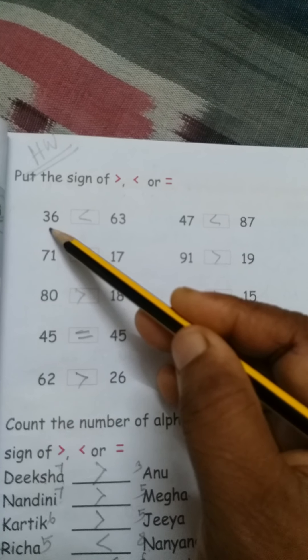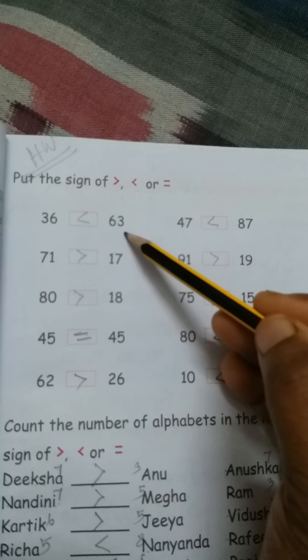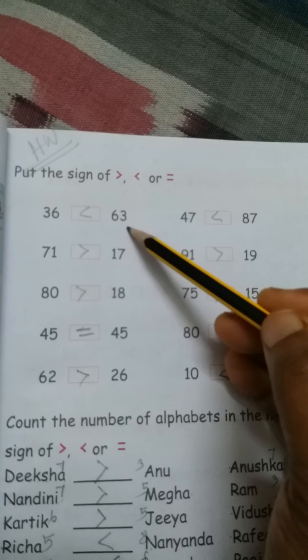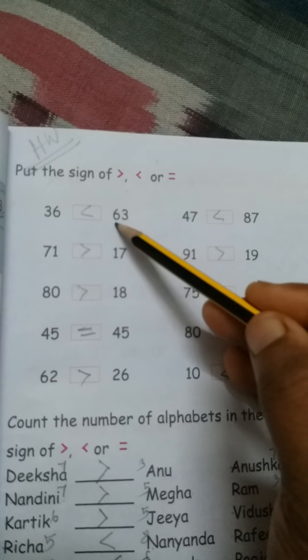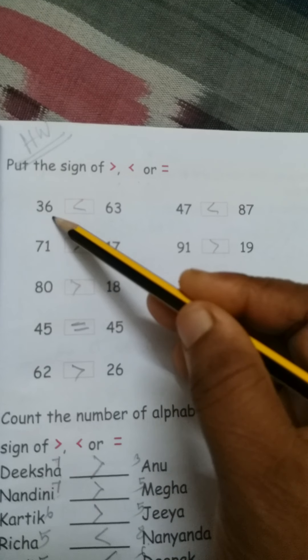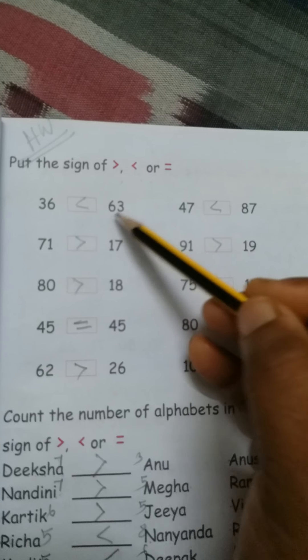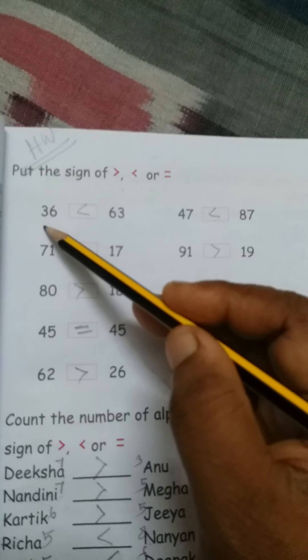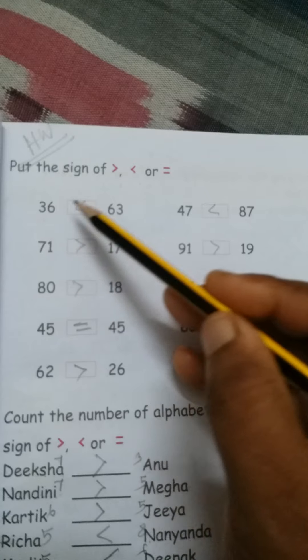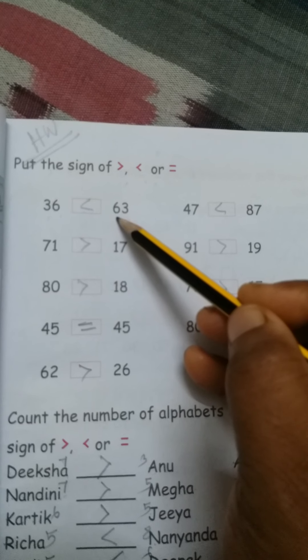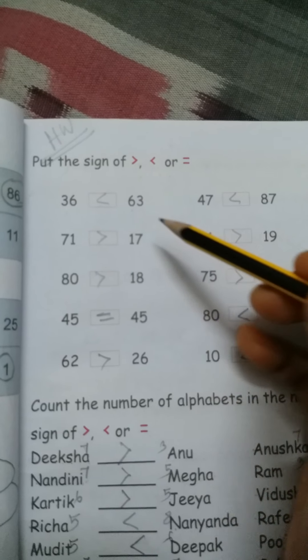First, 36 number and this is 63 number. We have to see which number is big number. 63 is the big number, 36 is the small number, so 63 is greater than 36, and 36 less than 63. First you have to understand, then you can do.